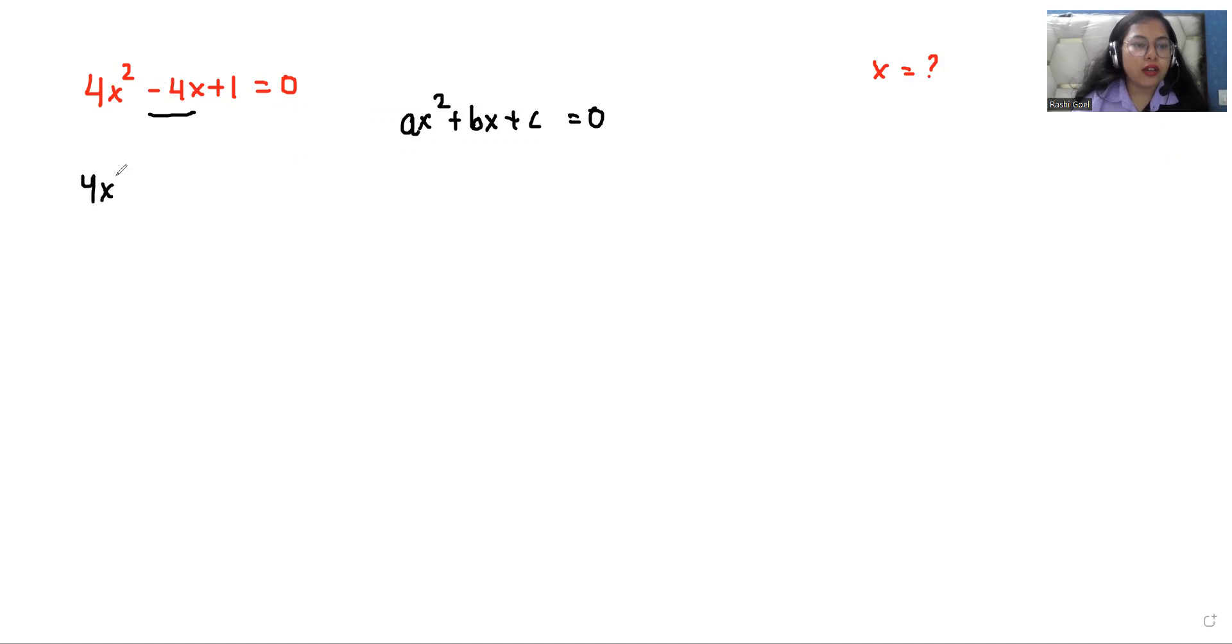I can write -4x as -2x - 2x, so 4x² - 2x - 2x + 1 = 0. Now from the first two terms, I can take 2x as common. So what is left? 2x - 1. And from here, if I take -1 as common, then 2x - 1 again.